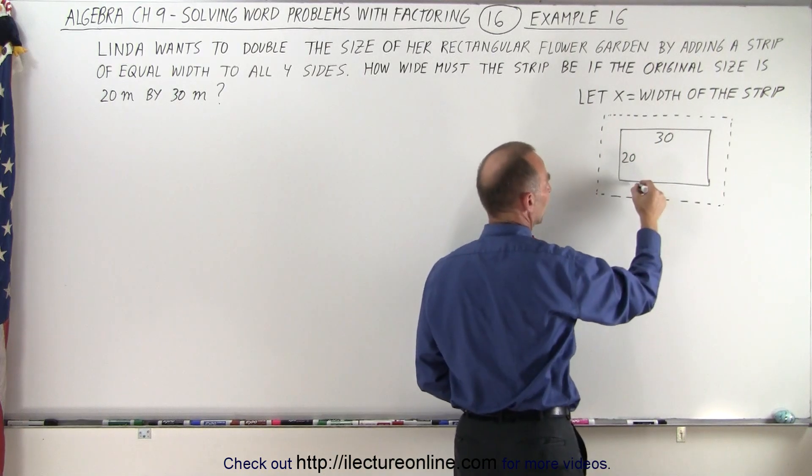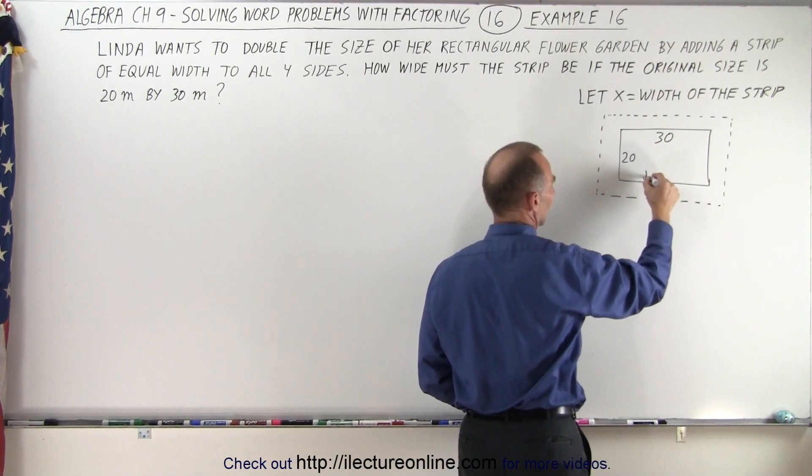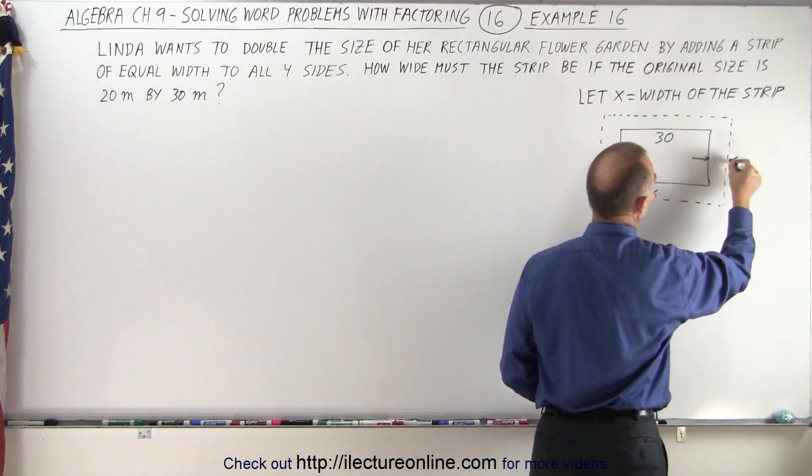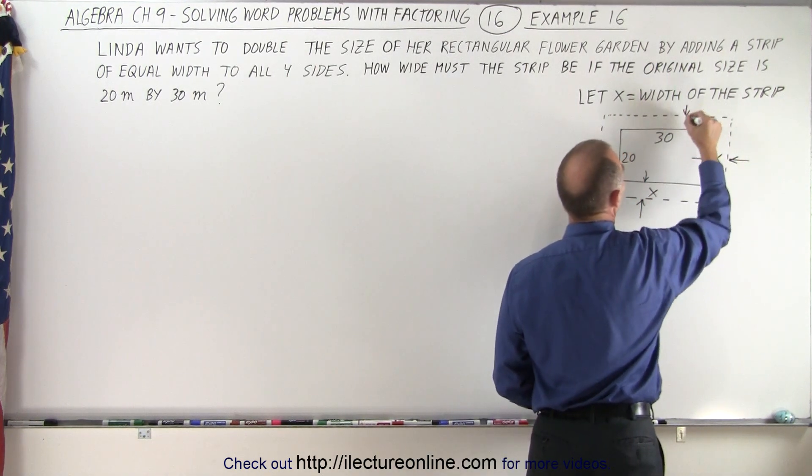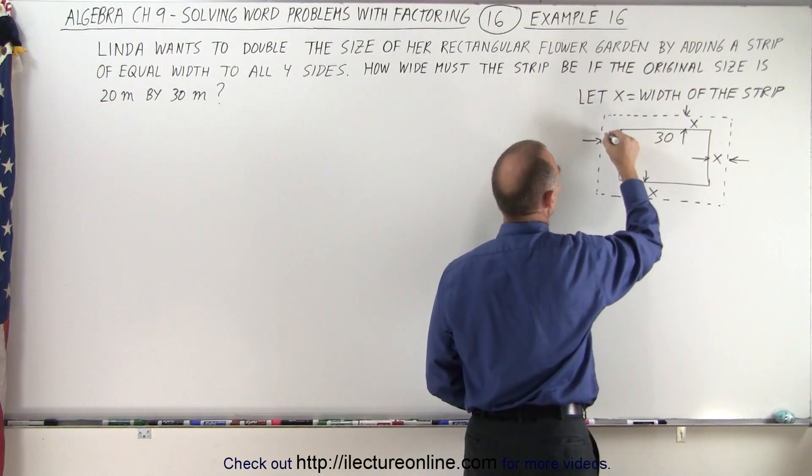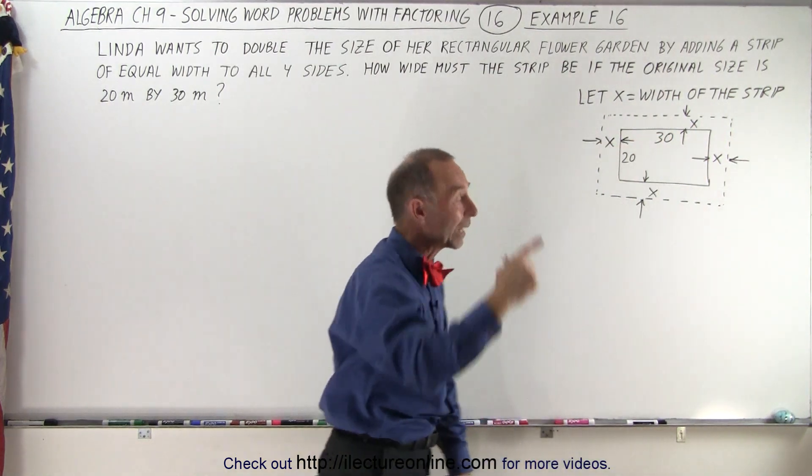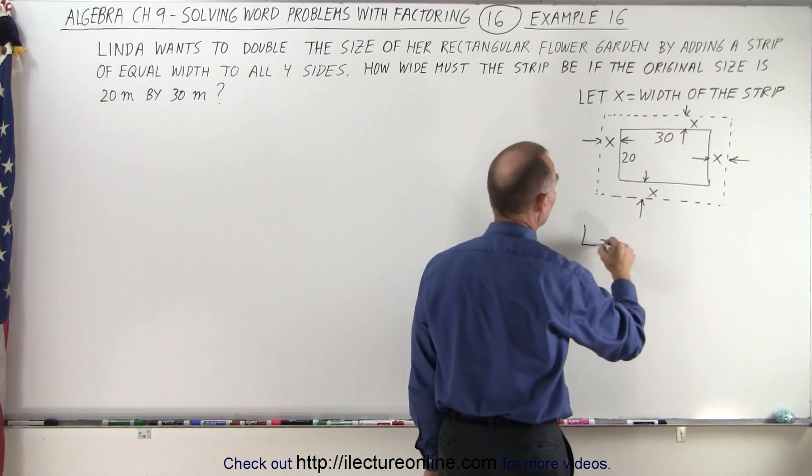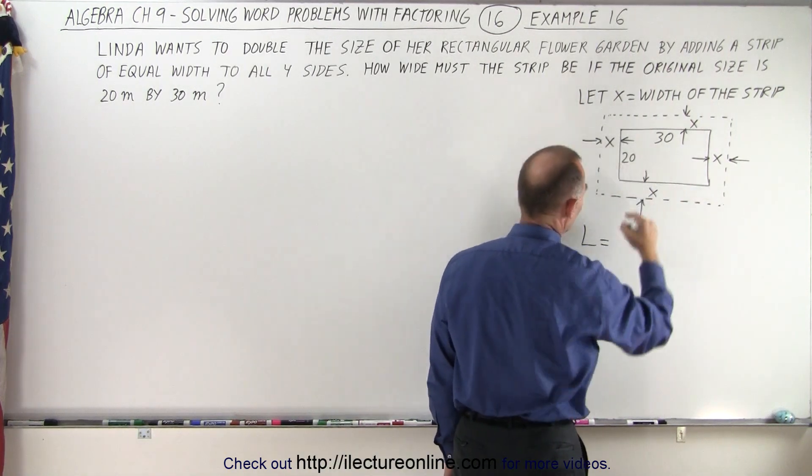So that means that the width from there to there would be x and the width from here to here would be x. The same on this side and the same on this side. So now we have a new rectangle. The length of the new rectangle would be equal to 30 plus 2 times x.